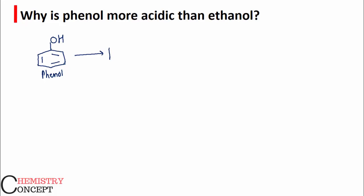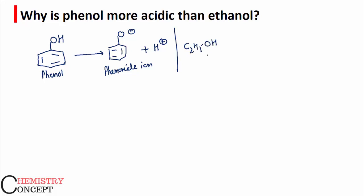When phenol releases a proton, it converts into phenoxide ion. On the other hand, when C2H5OH — that is ethanol — releases a proton, it converts into ethoxide ion and a proton is released.